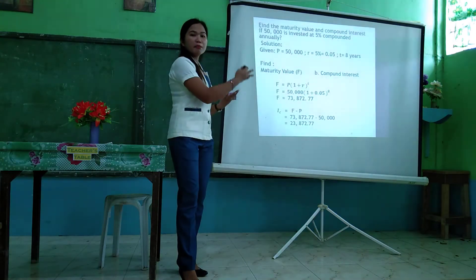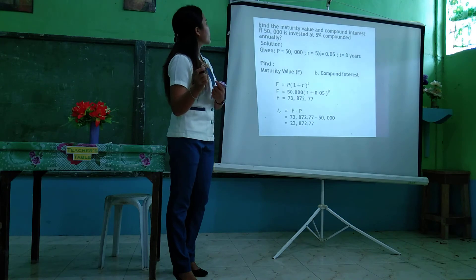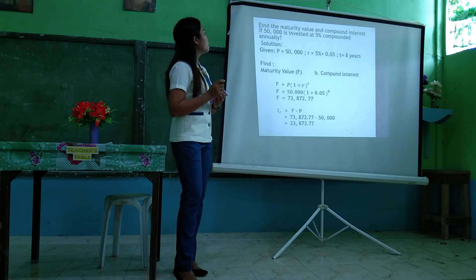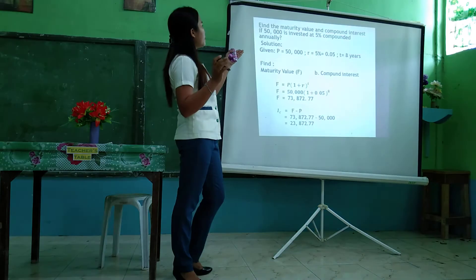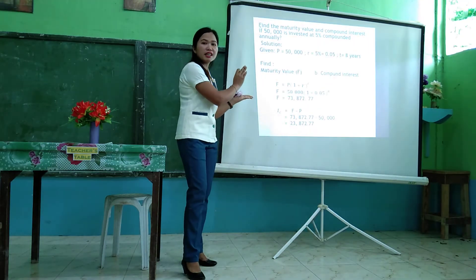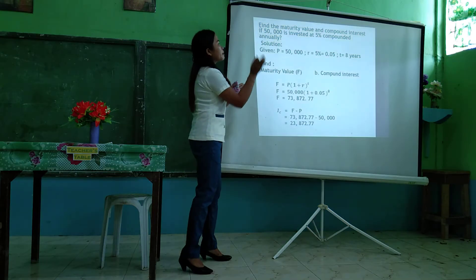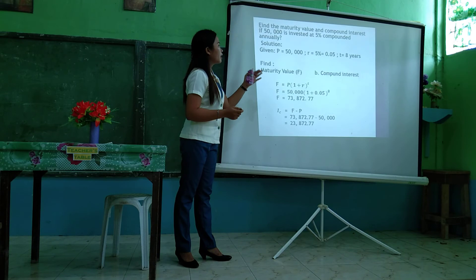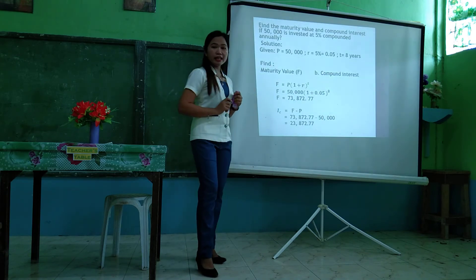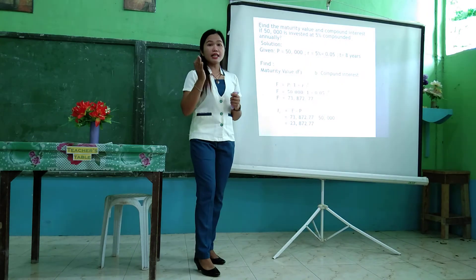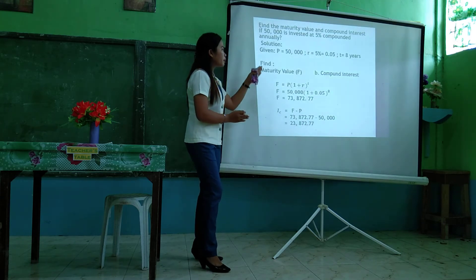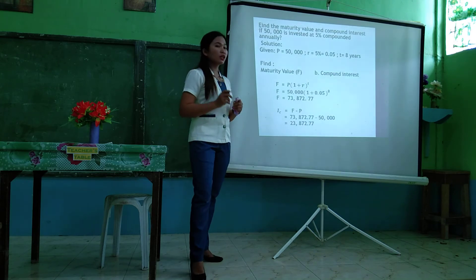We will apply the formula. Here is a problem: find the maturity value and compound interest if P = 50,000 is invested at 5% compounded annually for 8 years. Given: principal P = 50,000, rate R = 5% or 0.05, T = 8 years. Using the formula and substituting the given values, we get F = 73,872.77. For the compound interest, using I = F − P, we get 73,872.77 minus 50,000, which equals 23,872.77.